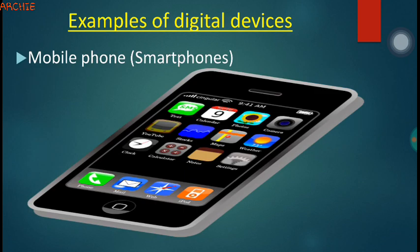Now let's look at some examples of these digital systems. Most of them can be seen in our homes and even at our workplaces. We have an example here — a smartphone or mobile phone, and I hope you know what this device is used for. Even some of us as children have these devices as our personal property.